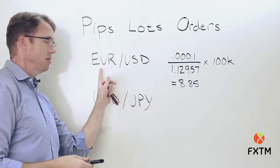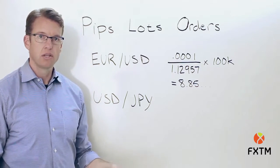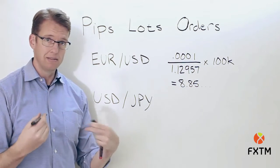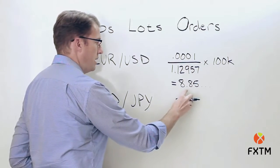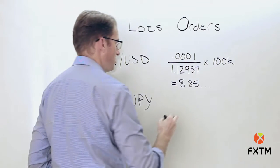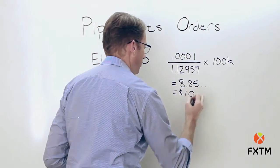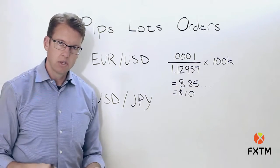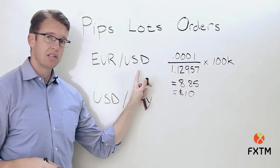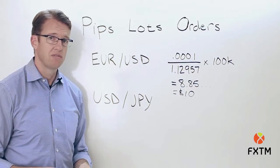If your account currency is the dollar and you want to know how much a one-pip move is worth to you, simply take that result of 8.85 and multiply it by the exchange rate of 1.12957. That comes out to an even ten dollars. In fact, for any currency pair where the dollar is in the quote and your account is in dollars, a one-pip move on a standard lot will always be worth ten dollars.